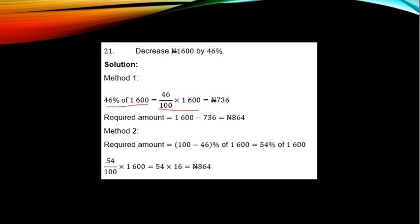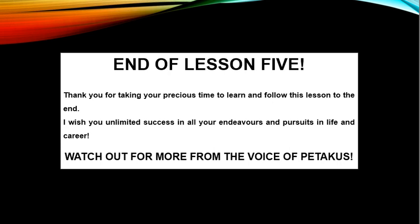46% of 1,600 equals 736 Naira. So the required amount is 1,600 minus 736, which is 864 Naira. Or method 2: The whole amount is 100%, so decrease means remove 46%, then calculate the remaining percent of 1,600. If you do that, you have 54% of 1,600, and that directly gives 864 Naira. End of Lesson 5.